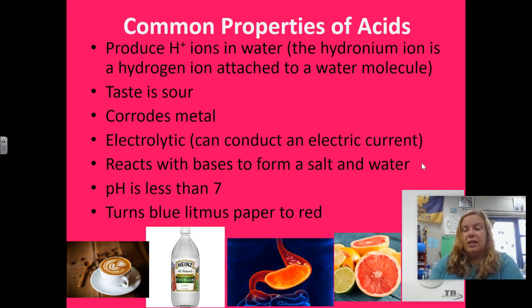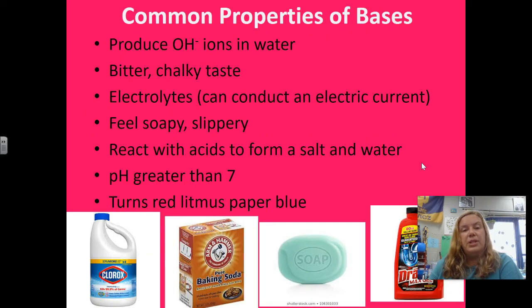Looking at the bottom here, you're going to see the picture I'm covering up is battery acid. That's definitely a very strong acid. Then you have citrus. You have stomach acid, which is a very strong acid. You have vinegar, and then coffee is even slightly acidic. Now, we have some common properties of bases, and bases produce these OH- ions in water. And sometimes, our Bronsted-Lowry model looks at it that they attach to something else. Typically, there's a bitter or chalky type of taste, and it's also electrolytic, meaning we can also conduct an electric current because there's ions, even though those ions are OH- ions. Typically, bases feel soapy or slippery, and they react with acids to form a salt and a water. The pH is greater than 7, which is different than an acid, and it turns red litmus paper blue. So the color for bases is blue over red.